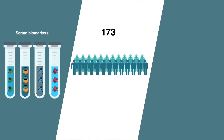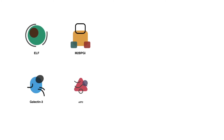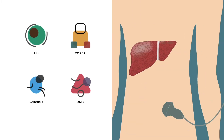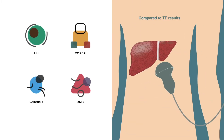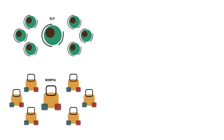The study included 173 CLD patients, and results were compared with liver fibrosis grades separately assessed using TE. Interestingly, the expression of each biomarker differed significantly when compared to the TE grade. ELF and m2bPGI were found to increase significantly with disease severity, compared to ST2 and Galectin-3.